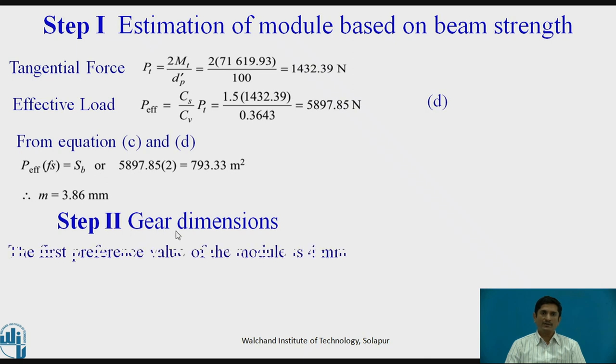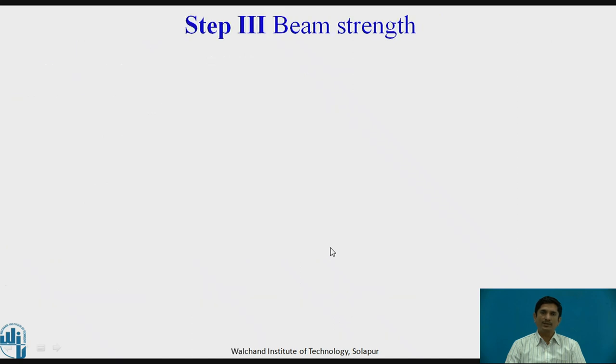Next step is getting the gear dimensions. With the help of this module value, the choice, the preferred preference value of the module is 4mm. We can get B equals 10 times module, 40mm. ZP the number of teeth of pinion are known. Module is known. Then we can calculate ZP. ZG we can calculate diameter of the gear upon module. Number of teeth are known. Lewis form factor for 25 teeth. See what we are doing. Now we know what are the number of teeth on pinion, and hence we can calculate Y for that. Exact beam strength equals 12693.33. When we put this module value, face width, sigma B, and the correct value of Y.